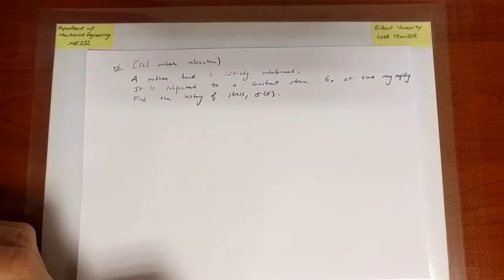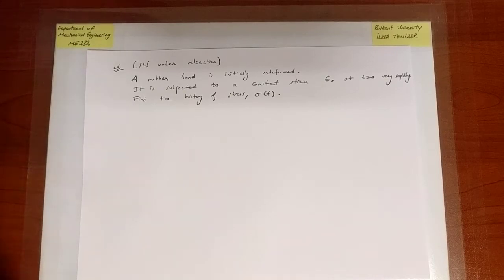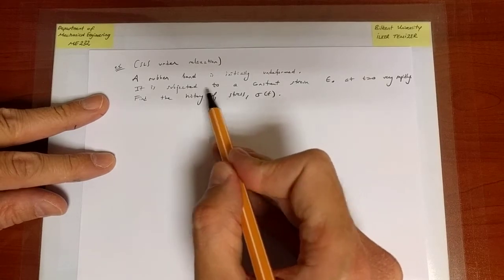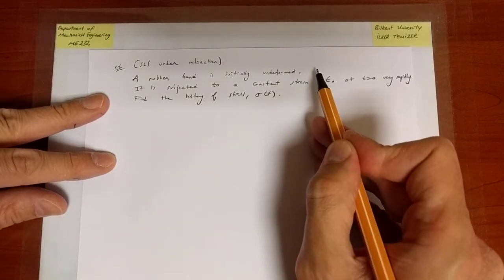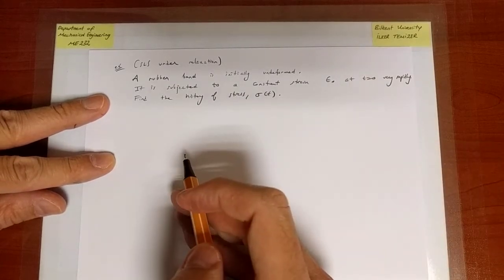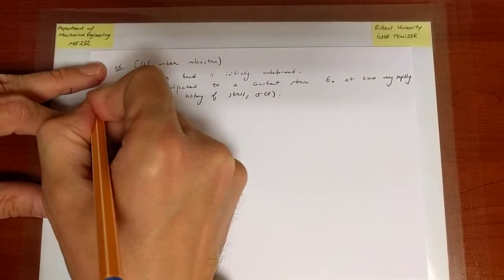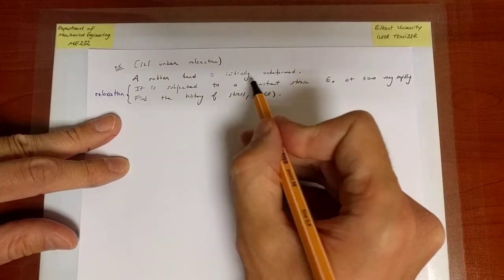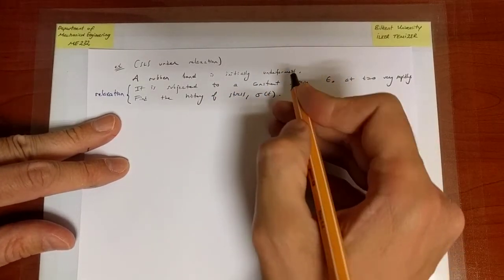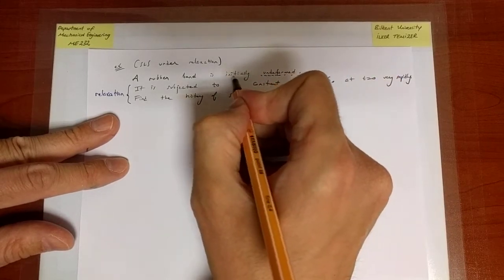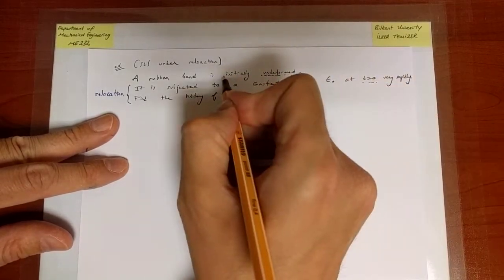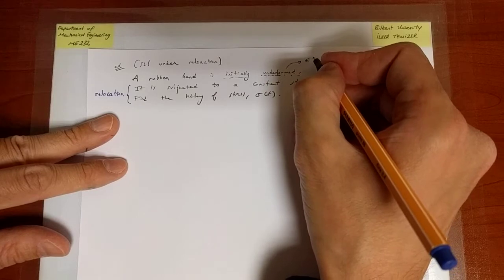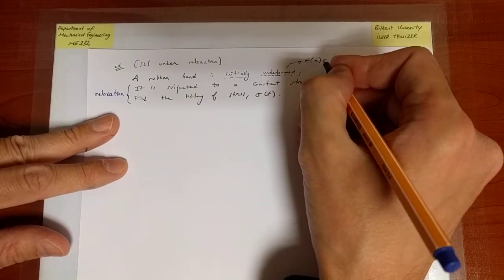So here we have a few keywords that we can fall back to. What all of this is describing is you have a material, all of a sudden the strain increases and then remains constant and you want to find the corresponding stress. That's how we describe the relaxation experiment. Now we have to extract a few more keywords. It says that initially, that refers to time equals 0, it is undeformed. Undeformed means at time equals 0, the amount of deformation is 0.